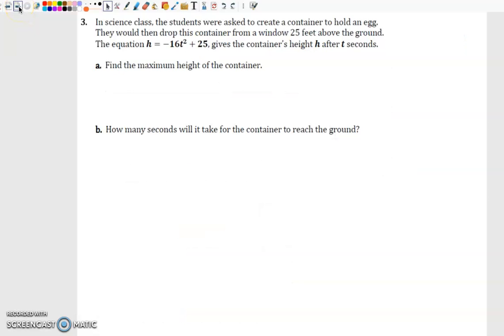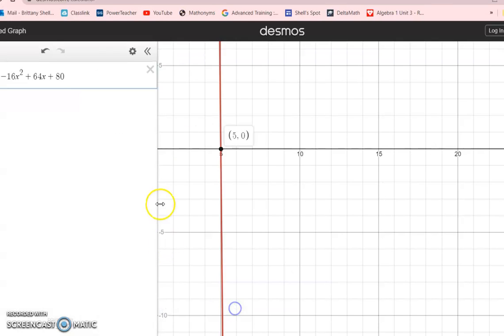If you were to try to find that algebraically, you can do that by using the quadratic formula. I wouldn't recommend any of the other methods, especially not trying to complete the square or anything like that. In science class, the students were asked to create a container to hold an egg. They would then drop the container from a window 25 feet above the ground. Find the container's height h after t seconds and then we're also going to find when it hits the ground. So we're going to put that equation in, negative 16t squared plus 25.